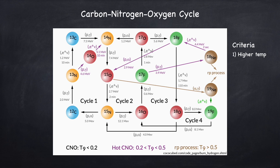Because generally speaking more massive stars require a higher temperature, higher mass stars will burn on the CNO cycle and lower mass stars on the proton-proton chain. Roughly speaking, to be burning on the CNO cycle you need a mass of about 1.5 solar masses or higher. So the Sun is burning on the proton-proton chain. Even though the CNO cycle is still occurring inside the Sun, the dominant form of energy production is the proton-proton chain.